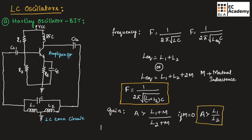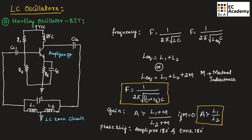Next is phase shift. The amplifier will produce a 180-degree phase shift and the feedback stage or tank circuit will produce a 180-degree phase shift. So the overall phase shift will be 180° + 180° = 360°, or equivalently 0°. This is the working of the Hartley oscillator.